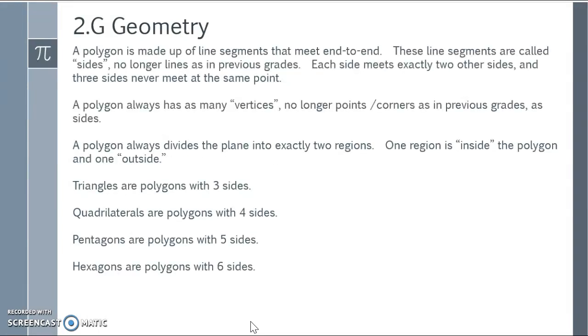A polygon is made up of line segments that meet end to end. These line segments are called sides. No longer will we call them lines as in previous grades. Each side meets at exactly two other sides, and three sides never meet at the same point. A polygon always has as many vertices—no longer will these be points or corners as in previous grades—as they do sides. A polygon always divides the plane into exactly two regions. One region is inside the polygon and one is outside the polygon. So that must mean that it is a closed shape.